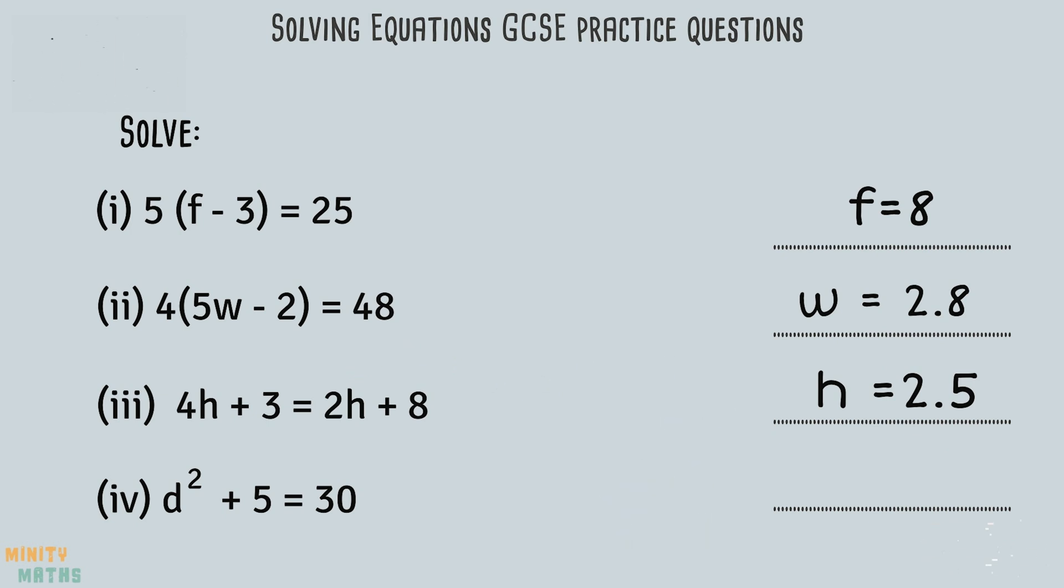The final question involves a power, but firstly we should get rid of the 5 by taking away 5 from both sides of the equation. We are then left with the equation d squared equals 25. We then take the square root of both sides to find out what d equals.